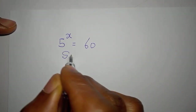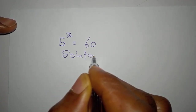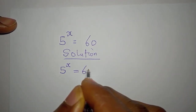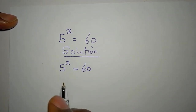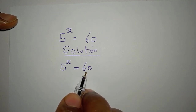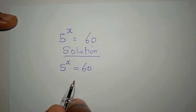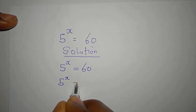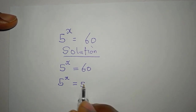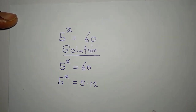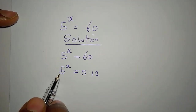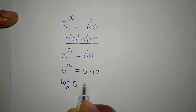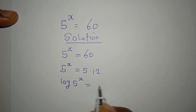Let's provide the solution to this problem: we have 5 to the power of x equals 60. One thing you should know is we cannot express 60 in this form. Let's see if 5 is a factor of 60 — so we have 5 to the power of x equals 60, which is 5 multiplied by 12. Do not divide both sides by 5 yet, because if you do that you will be wrong. So we can take the log of both sides: log of 5 to the power of x equals log of 5 multiplied by 12.